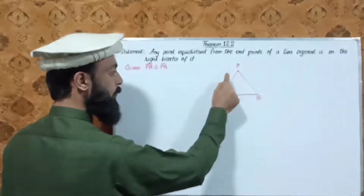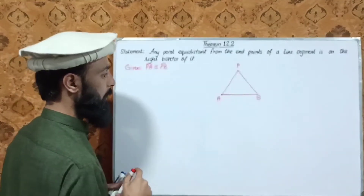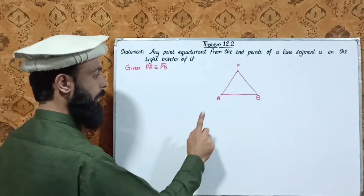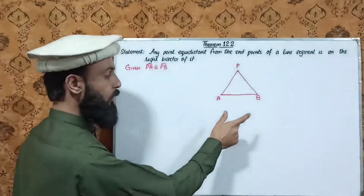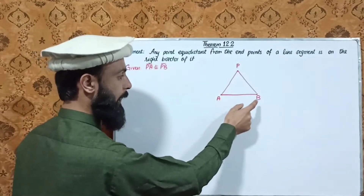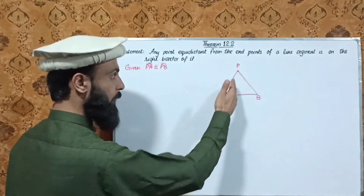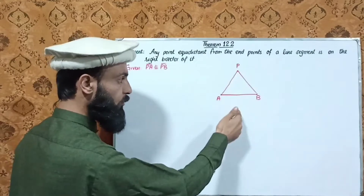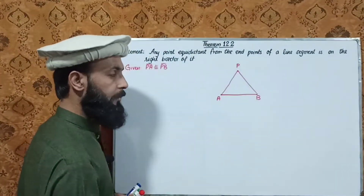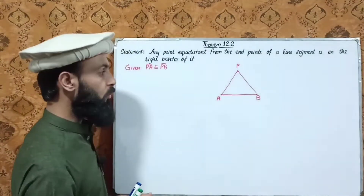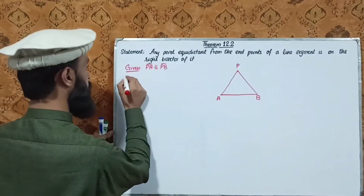The right bisector of AB — the perpendicular bisector — is a line that passes through the midpoint of the line segment and is perpendicular to it, dividing it into two equal segments.